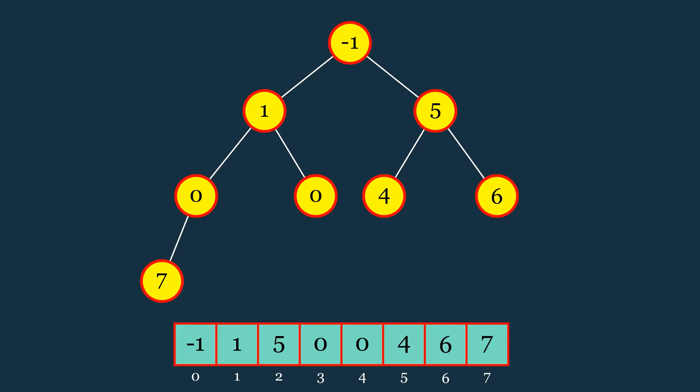To build a max heap, we start from the lowest non-leaf node and perform the heapify down operation on each node, working our way up to the root. The reason we begin from the lowest non-leaf node is that, in a complete binary tree, about half of the nodes are leaf nodes, and they don't need to be heapified.